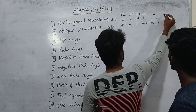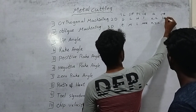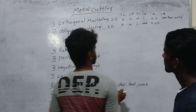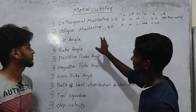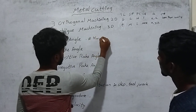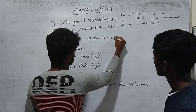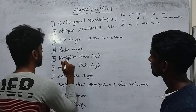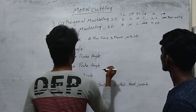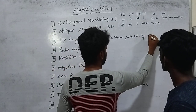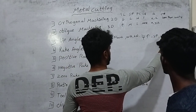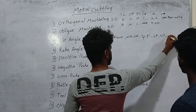Here is the chip thickness ratio, which is less than unity. Here is the difference between orthogonal machining and oblique machining. The lip angle is the angle between the face and the flank. The wedge angle and knife angle are also noted here. As the length increases, tool life increases and heat dissipation increases.